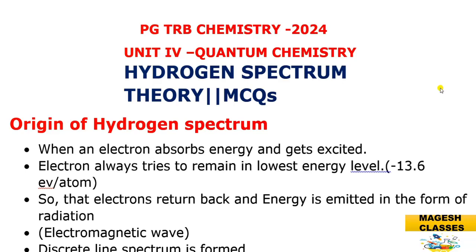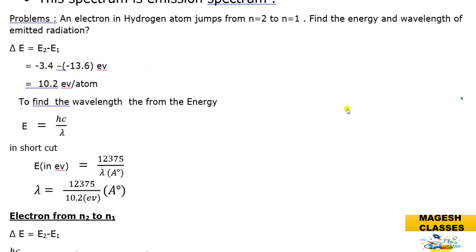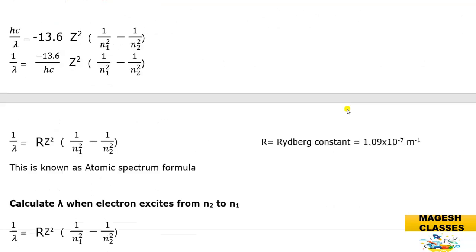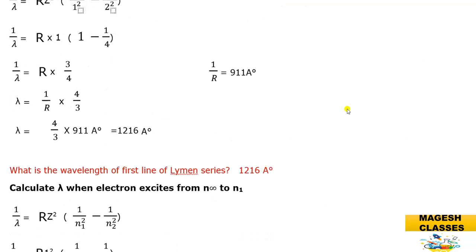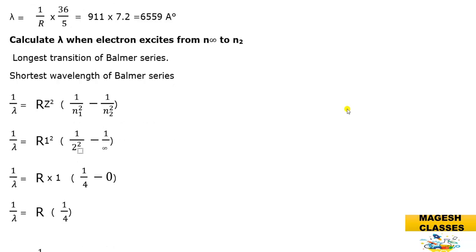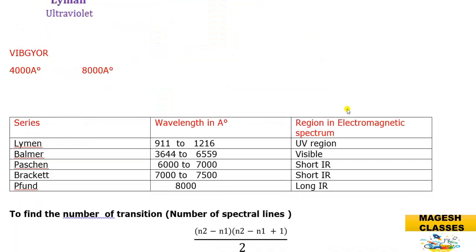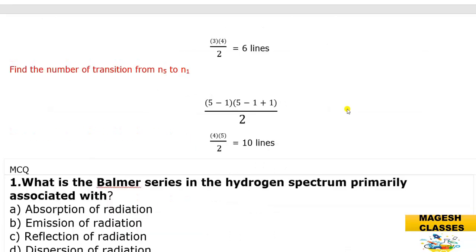Hello viewers, welcome to McGee's Chemistry Classes. In this presentation we are going to discuss EJDRB Chemistry 2024, Unit 4: Quantum Chemistry. The topic is hydrogen spectrum. This video contains the origin of hydrogen spectrum, related problems, various series — Lyman, Balmer, Paschen, Brackett, Pfund — number of spectral lines formed, how wavelengths are calculated, and properties related to the spectrum.